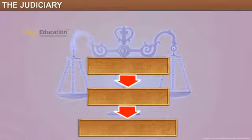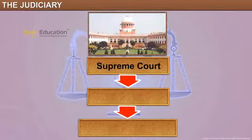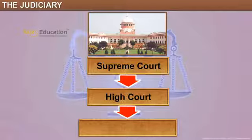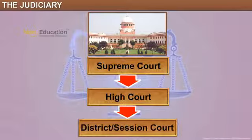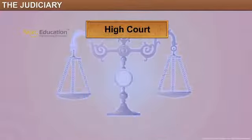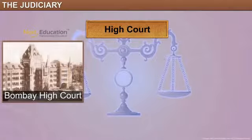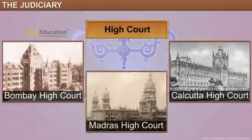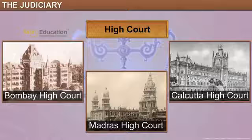The Indian judiciary is a three-tiered system with the Supreme Court at its helm, officiated by the Chief Justice, the High Court at the Head of State, followed by the District and Sessions Court. The High Courts were established in the presidencies of Bombay, Calcutta, and Madras in 1862, well before the Supreme Court.